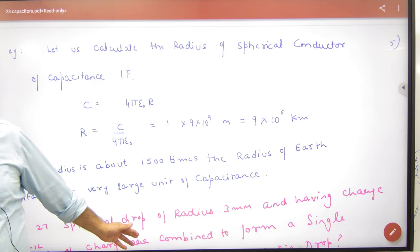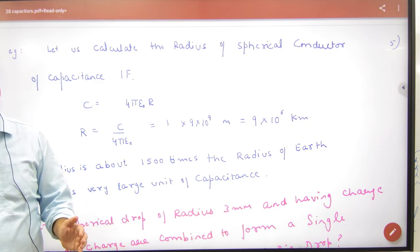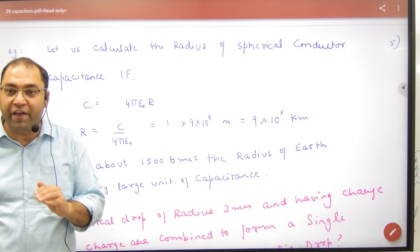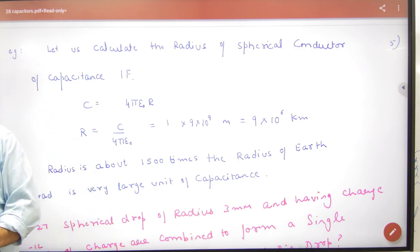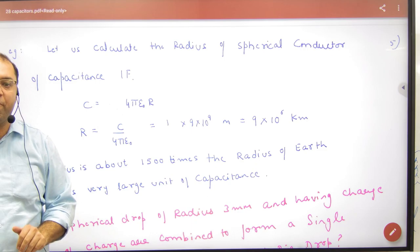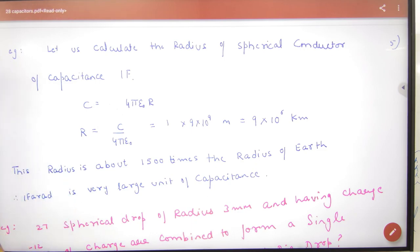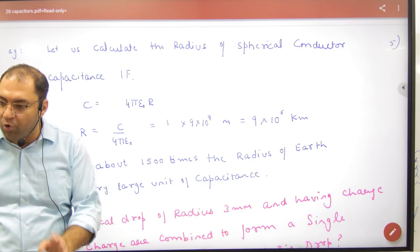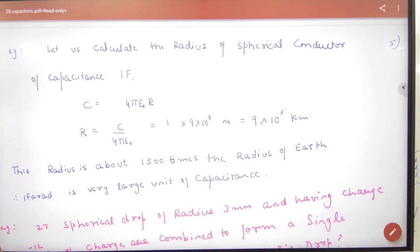This capacitor doesn't exist. A one farad capacitor is very big - it does not exist in spherical form. This is why capacitances are measured in microfarad or picofarad. Small capacitors work in micro and pico ranges.